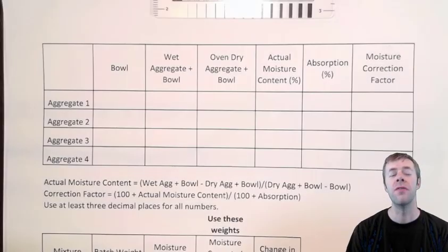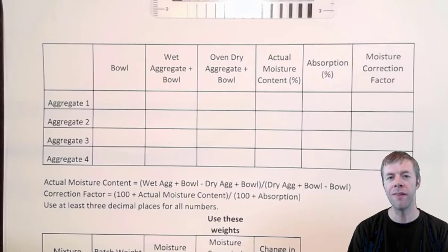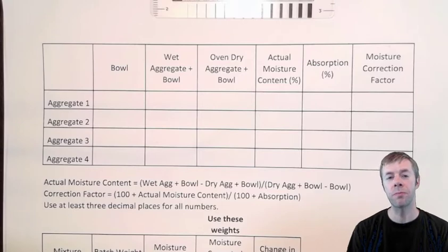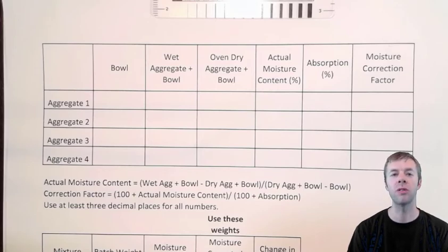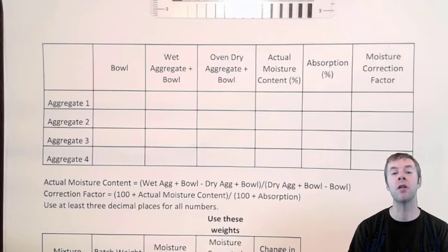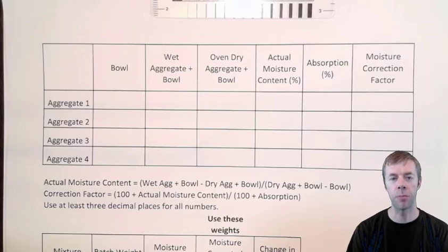This is a worksheet, and there's also a spreadsheet available in the comments section at the bottom. This spreadsheet is actually programmed to do this for you, but it's really important to know how to do the math yourself — it's critical. You won't always have a computer, and sometimes if the computer is giving you weird numbers, you need to be able to calculate it yourself. It also helps you learn it much more deeply.